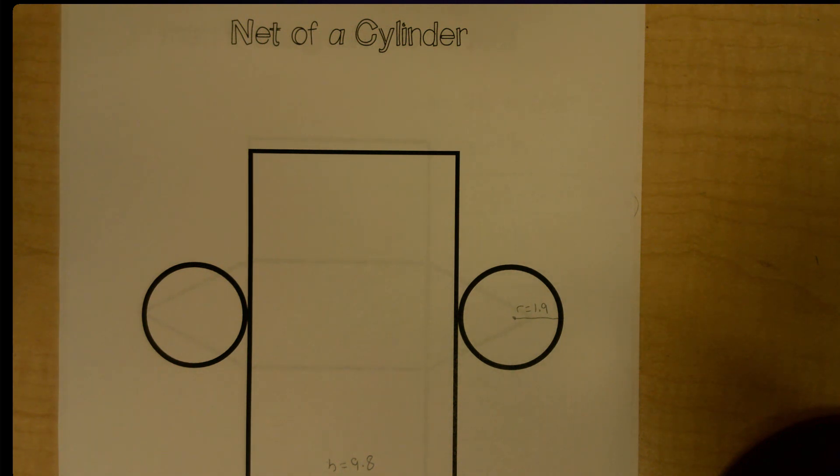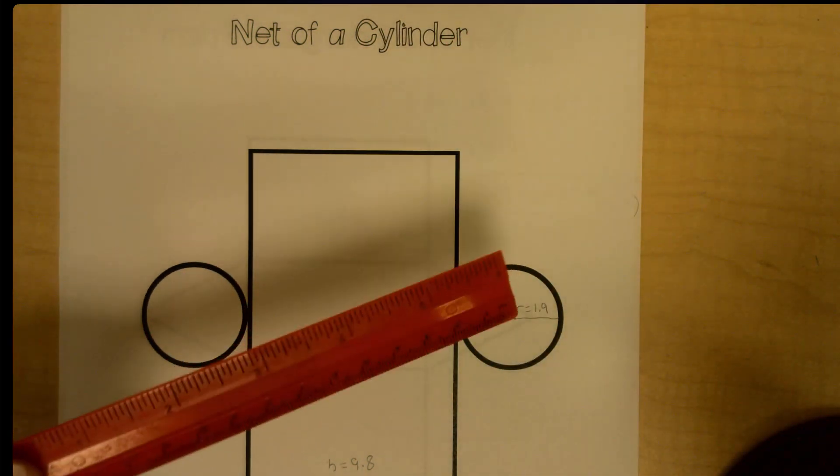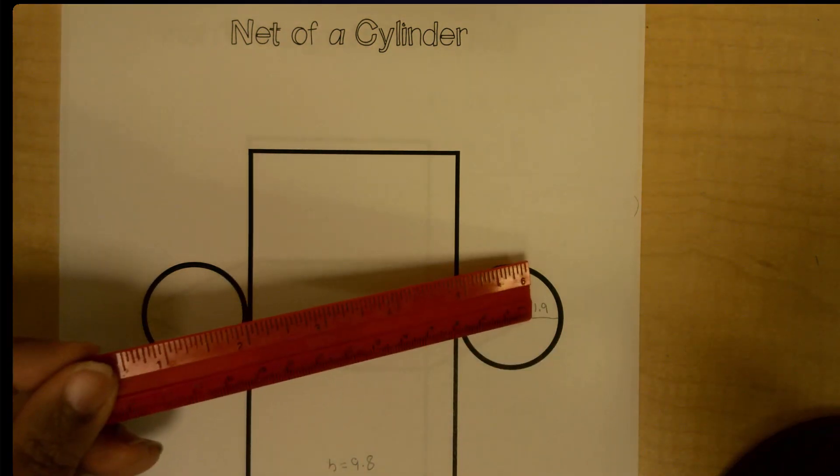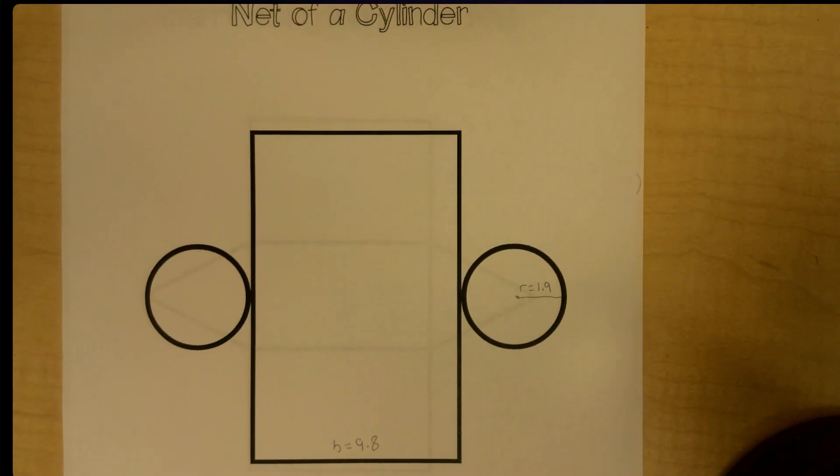The first thing I did was I took a ruler and measured the radius and the height of the cylinder here. I measured them in centimeters.